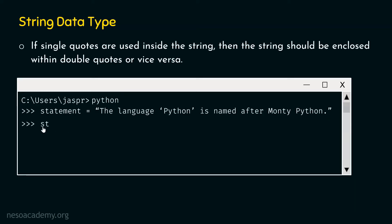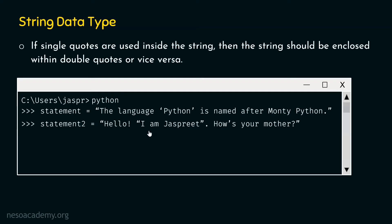Now if I type statement two equal to: Hello, I am Jaspreet, how's your mother? — this time I have planned to include both double and single quotes within a string. This is a problematic situation. This statement is completely invalid in this case, as this would only work if we are planning to use only single quotes or only double quotes within a string. If I hit enter, I will get a syntax error: invalid syntax message from Python.